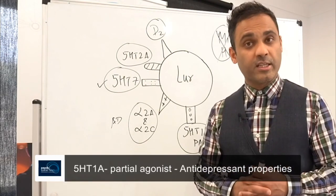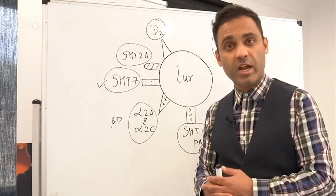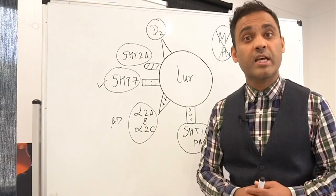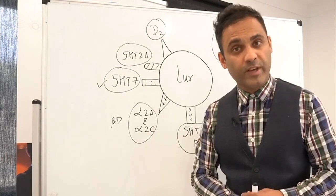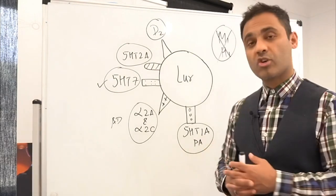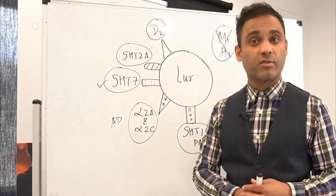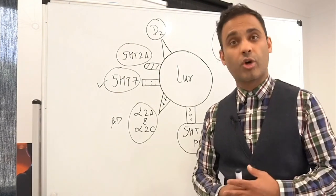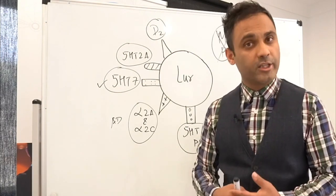Therefore, lurasidone is indicated in schizophrenia. It's on the PBS for schizophrenia in Australia. But lurasidone is also indicated and has good evidence in bipolar depression, major depressive disorder with mixed features, and it is prescribed as an antipsychotic in combination with the antidepressant in major depressive disorder with psychosis. So for these three indications, it's not on the PBS. However, it is used off-label by clinicians.